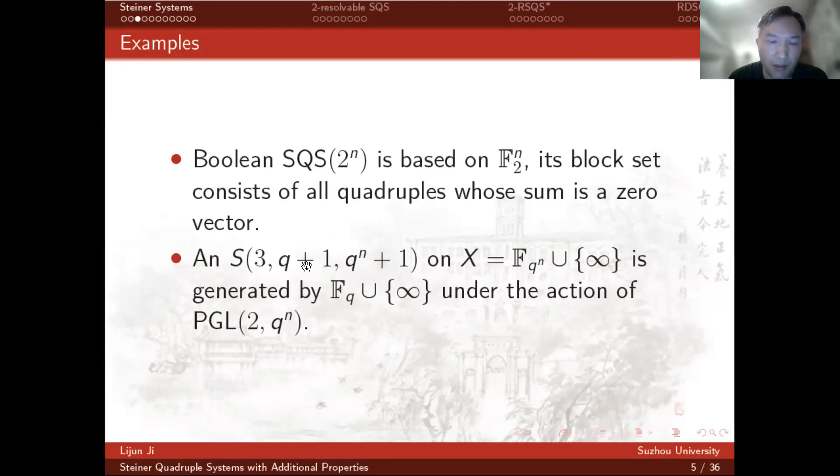A Steiner system of block size q plus one of order q to the prime power n plus one on this set is generated by this set under the action of projective general linear group.